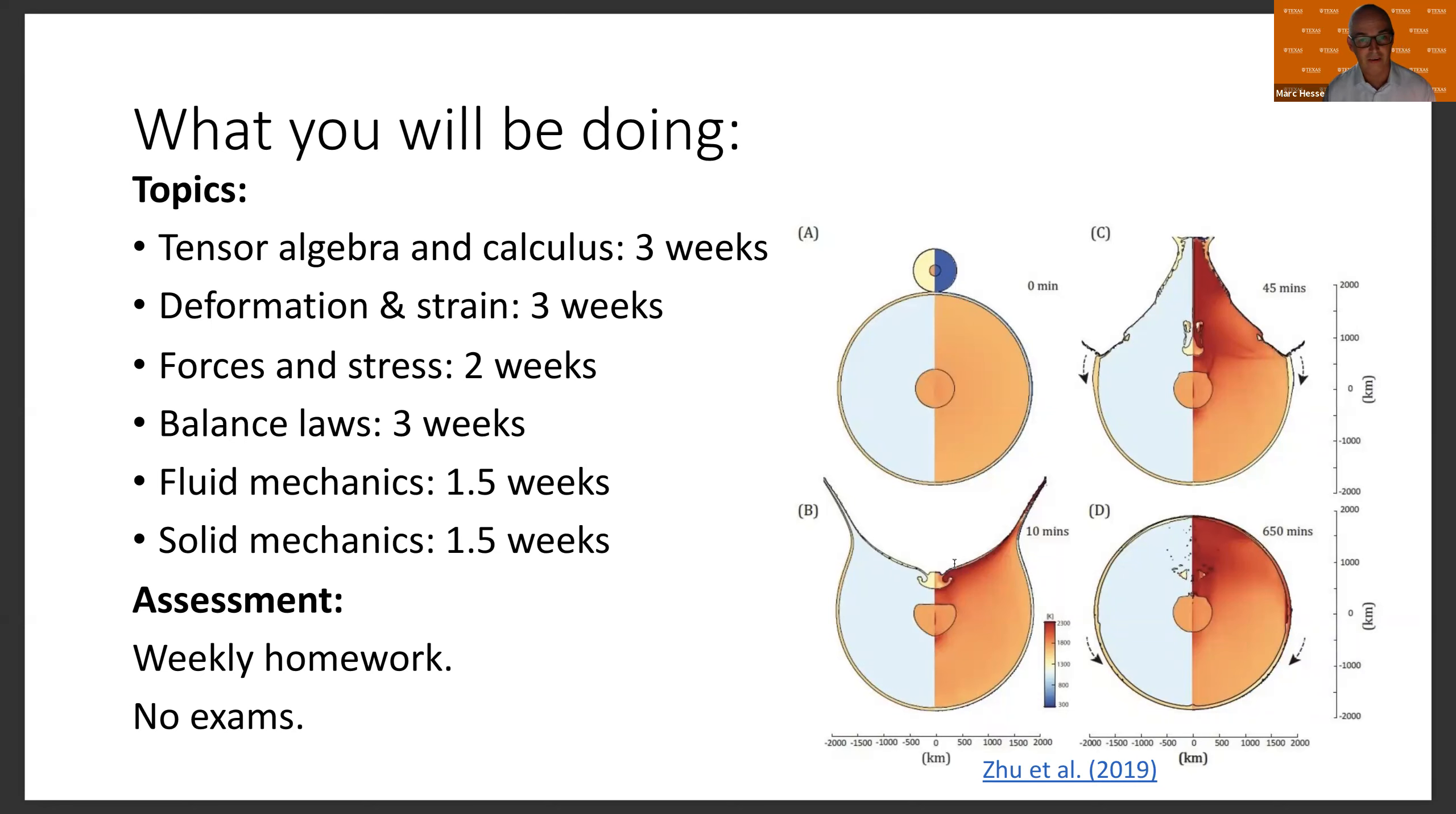And then on the right here is another exciting example of continuum mechanics at work. This is a giant impact, as it's thought to have happened early in the history of the Earth, where a very large object collides with the Earth and essentially melts a significant part of the Earth. And you can also see that the core of this object partially merges with the core of the Earth.